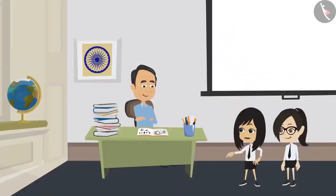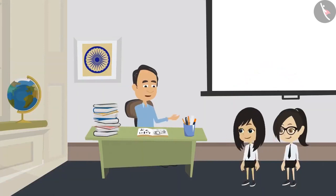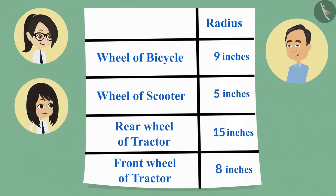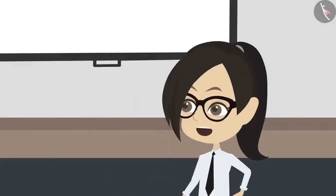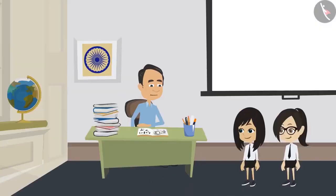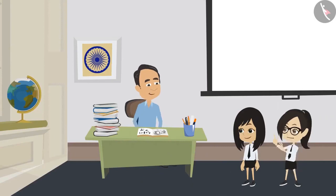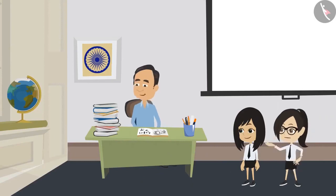Now I can tell whether the front wheel of the tractor is bigger or the wheel of the bicycle. The wheel of the bicycle is bigger because its radius is 9 inches, which is more than the radius of the front wheel of the tractor, which is 8 inches. This means when we know the radius or diameter of a circle, we can tell whether it is big or small without looking at the circle.